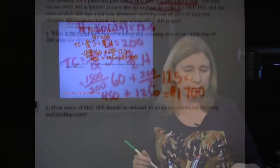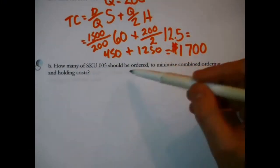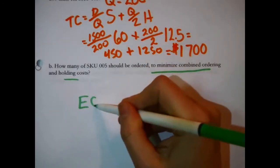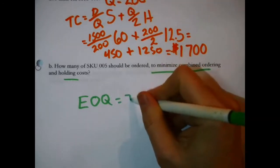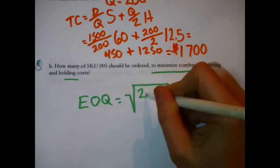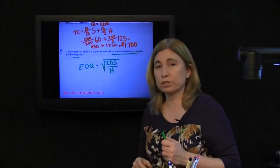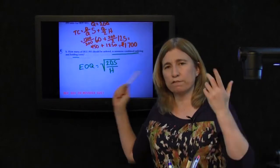Now, what's the next question? How many SKU005 should be ordered to minimize the combined ordering and holding costs? There it is. That's the EOQ, the economic order quantity, which is the square root of 2 times D times S divided by H. To answer that question, what amount would actually minimize those costs? You fill in that formula.